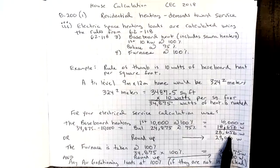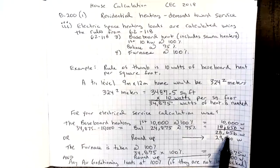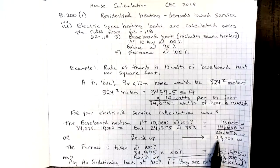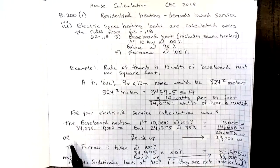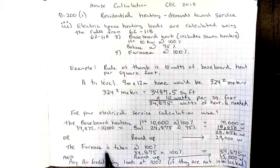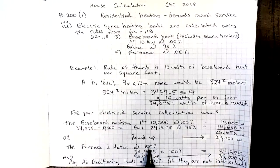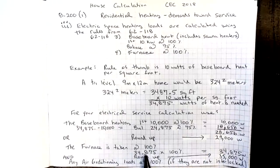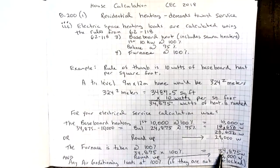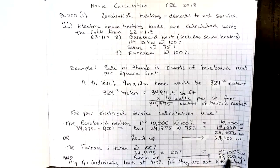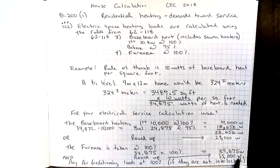That's an awkward number because baseboard heat doesn't really work out to odd numbers. So I would round up this number to 29,000 watts of heat. If I had a furnace in the home, the furnace is taken at 100%, I need 34,875 watts of heat times 100%, rounded up would be 35,000 watts of heat.